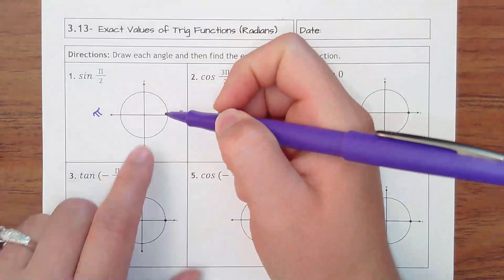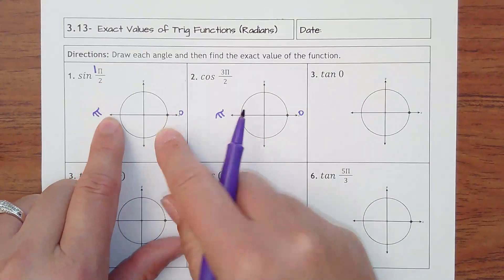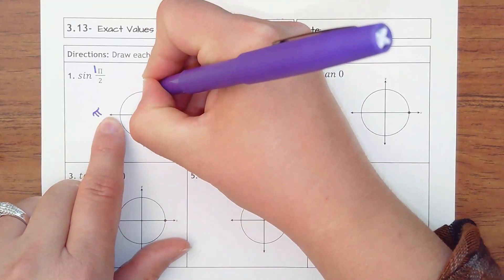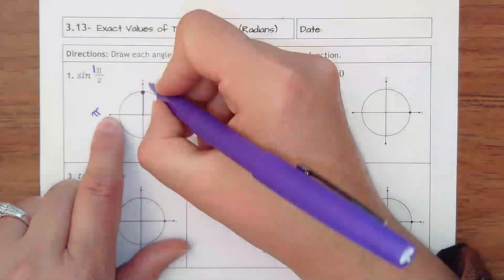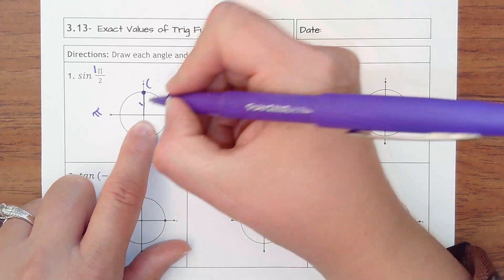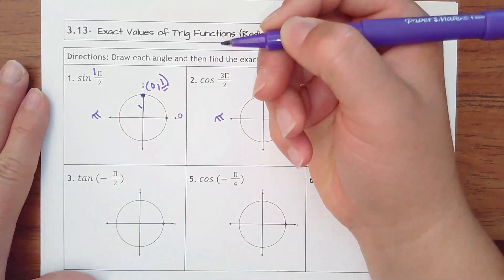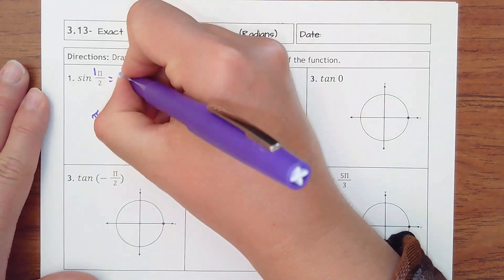Sine of pi over 2, so that's half of a pi or half of a semicircle, because semicircle is pi, would be here. So this is one of those where it's just knowing the ordered pair of this point, which we said this radius is always 1, so this is the point 0, 1. And sine is always the y value, so sine of pi over 2 would equal 1.